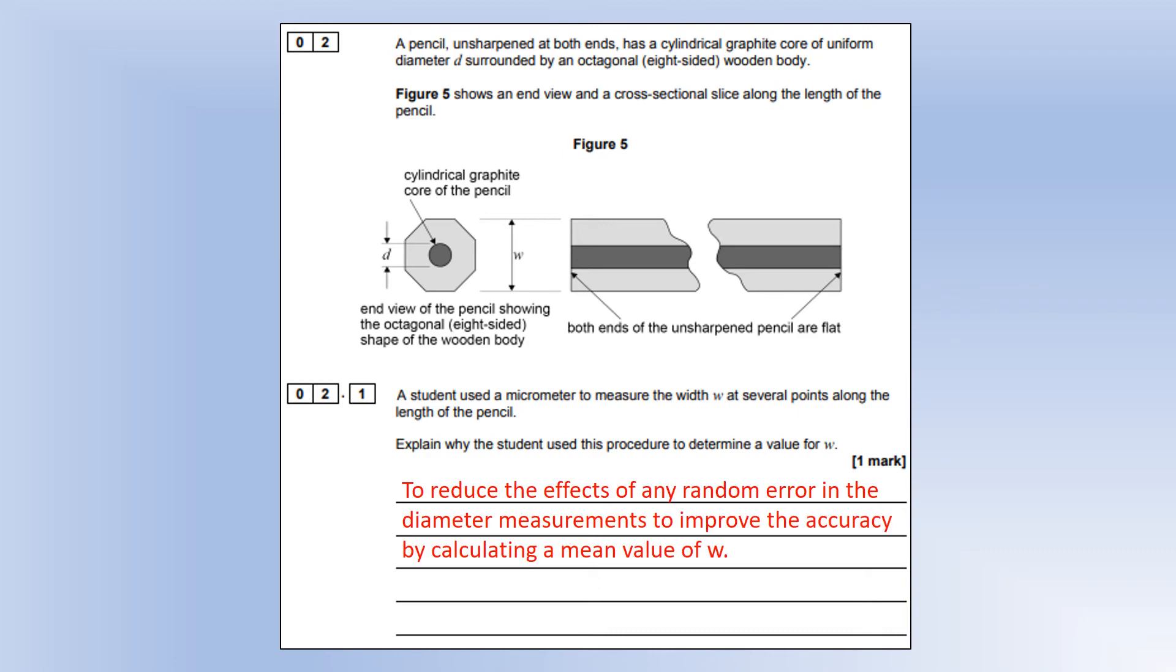There are a few reasons you might do that. Having multiple repeat readings and getting an average helps reduce the effect of any random error in the measurements, which helps you improve the accuracy of your measurement. That's the key there.